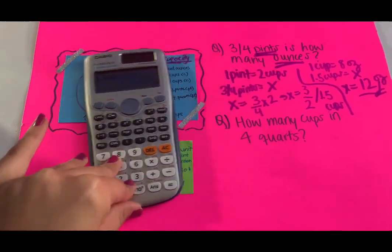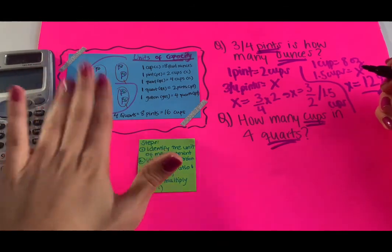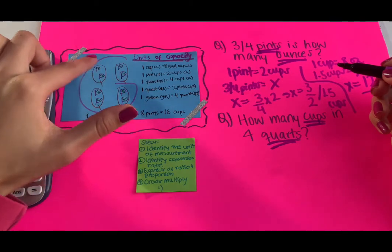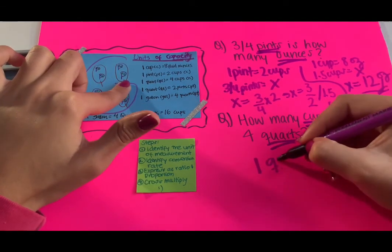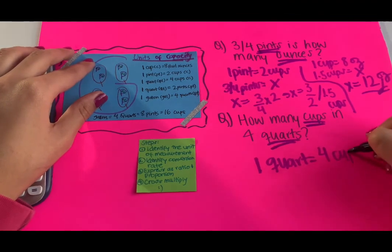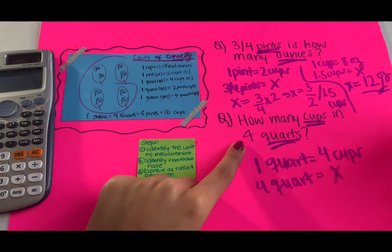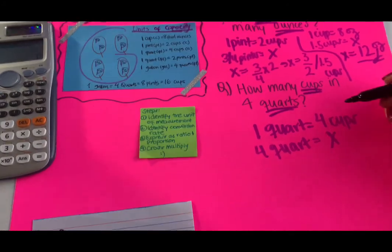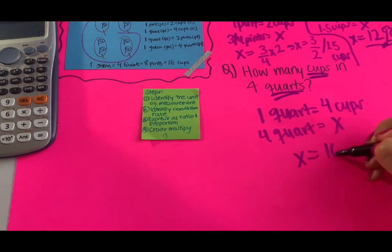The other question: how many cups are in four quarts? Reading the diagram — one quart contains four cups, so one quart equals four cups. We have four quarts and we're finding cups (x). Cross multiply: 1 times x is x, and 4 multiplied by 4 is 16. So the answer is 16 cups. Thank you for watching — please like and subscribe and comment below for any questions.